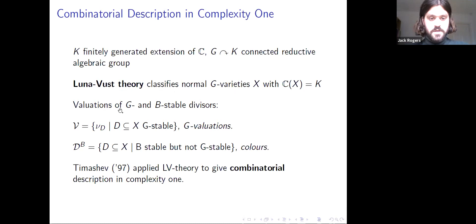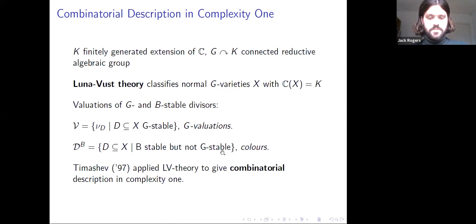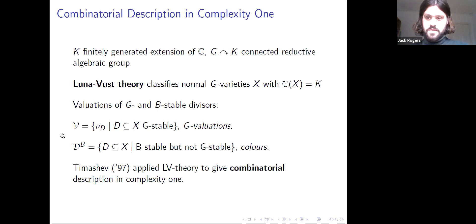The Luna-Vust classification works by looking at valuations of G-stable and B-stable divisors in X, where B is a Borel subgroup of G. We look at the set V of G-valuations — corresponding to the G-stable divisors in X — and the set D_B of colors, which are prime divisors that are B-stable but not G-stable. Luna-Vust theory classifies varieties with respect to data associated with these sets V and D_B.